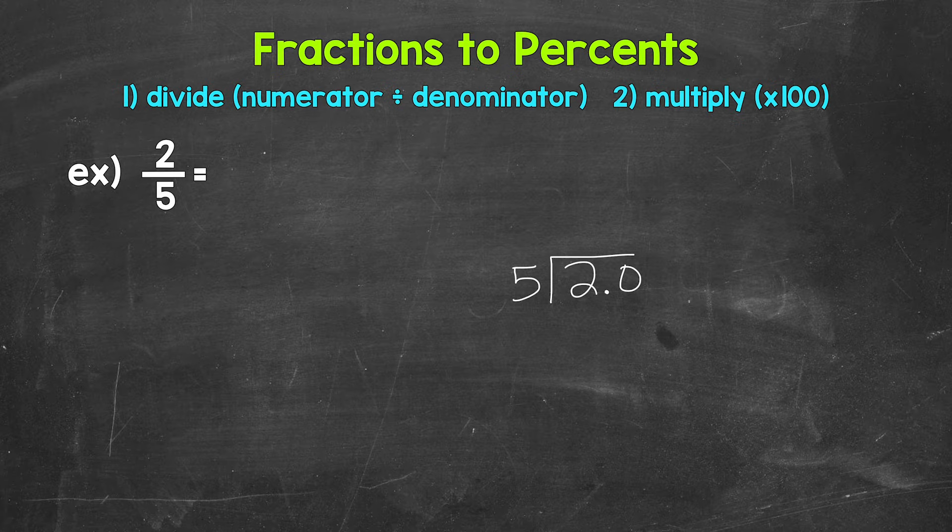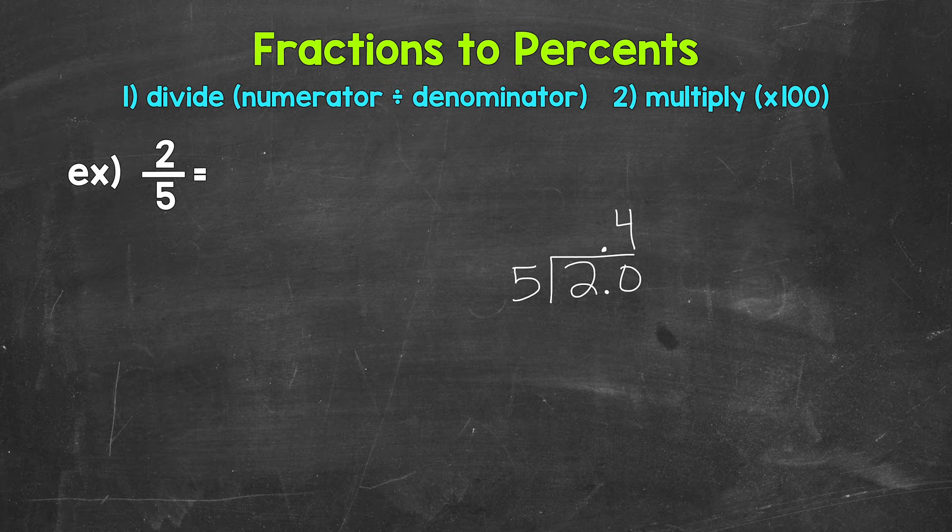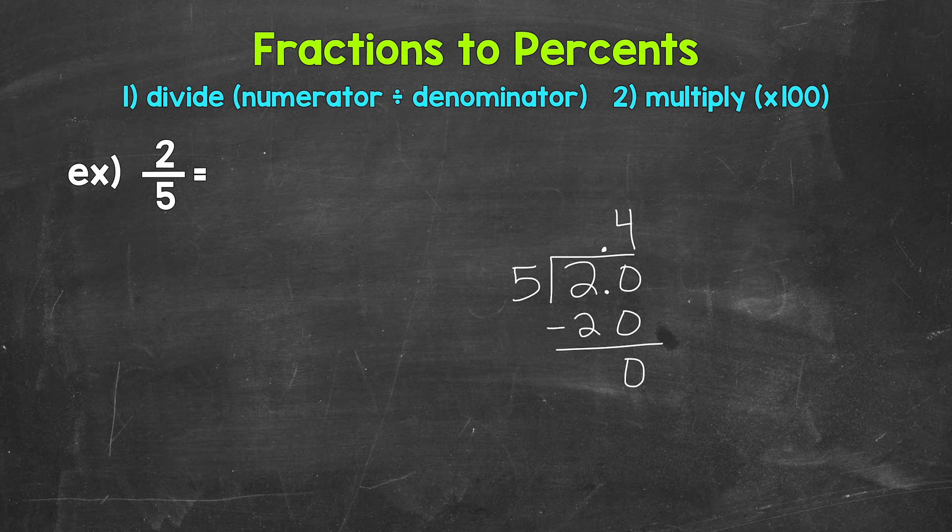Once we have the decimal and the zero, bring the decimal straight up into where the quotient, the answer, will be. And now we can think of this as 20 divided by five, which is four. So we put the four above the zero right here, since we used that zero and thought of this as 20 divided by five. And that's going to line us up correctly. Now we multiply four times five is 20, subtract 20 minus 20 is zero. So now we have a clean cut zero there at the bottom. Nothing else to bring down within our problem. So we are done.